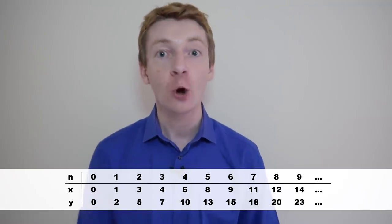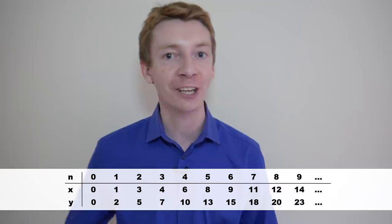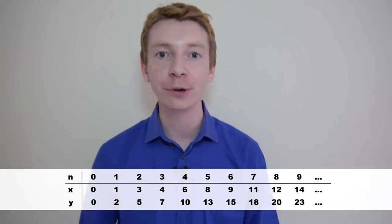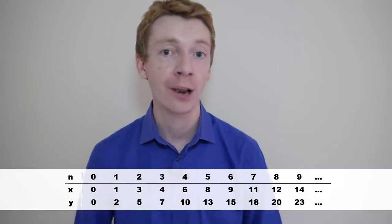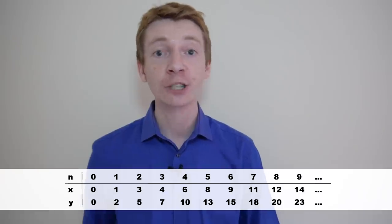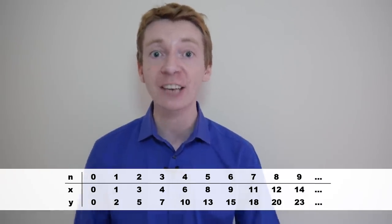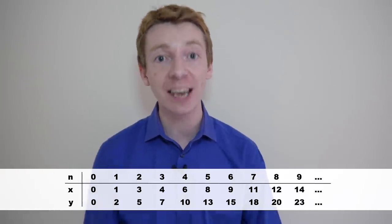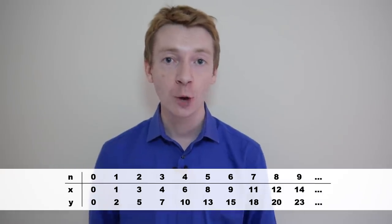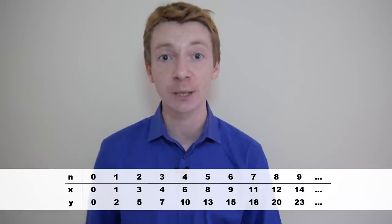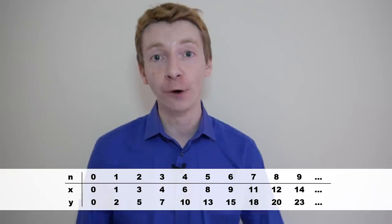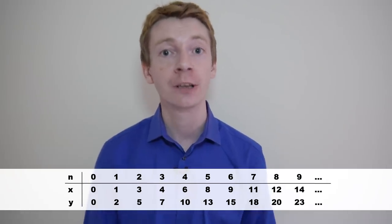For example, if we want to work out what the fourth losing square is, we use the smallest positive integer that hasn't appeared yet, which is 6 in this case. We know the difference in coordinates has to be 4, so the fourth losing square has coordinates 6-10.